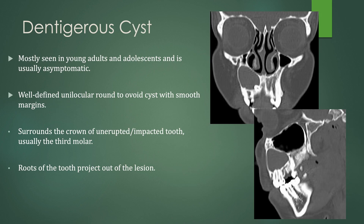A dentigerous cyst, mostly seen in young adults and adolescents, is usually asymptomatic. This is a well-defined unilocular round-to-ovoid cyst with smooth margins. It surrounds the crown of an unerupted or impacted tooth, usually the third molar, and the roots of the tooth project out of the lesion. Here's an example of a dentigerous cyst: an expansile lucent lesion with smooth margins, scalloping of the bone around it, and here is the associated molar tooth.